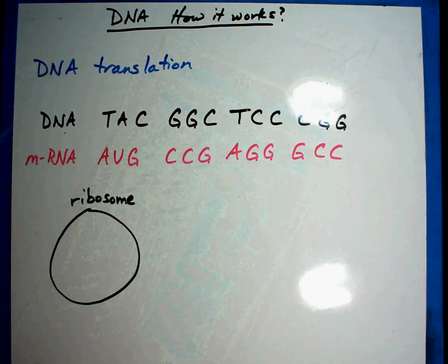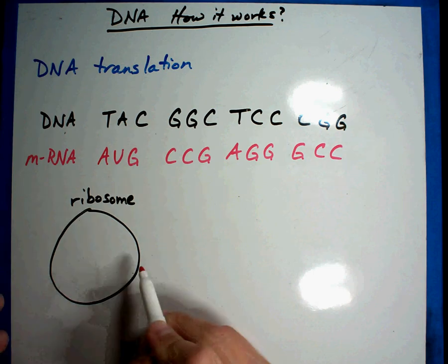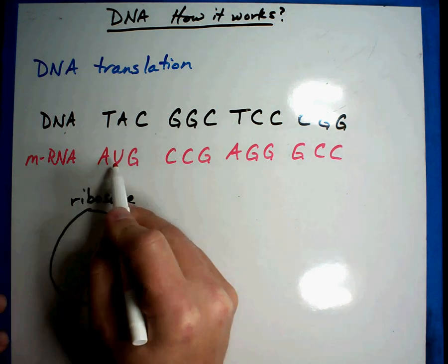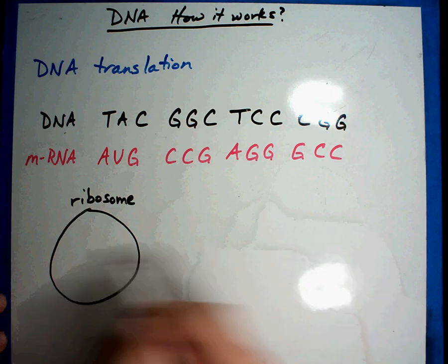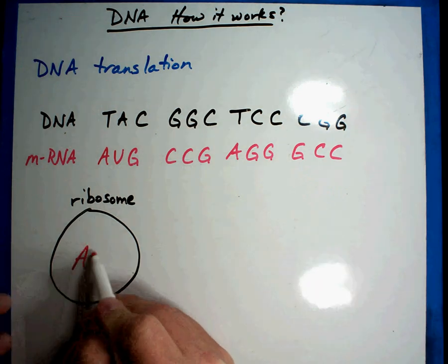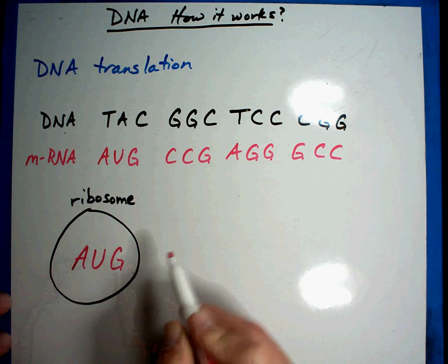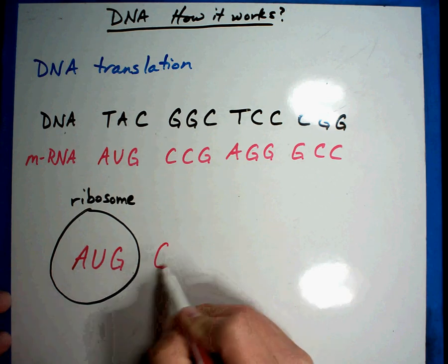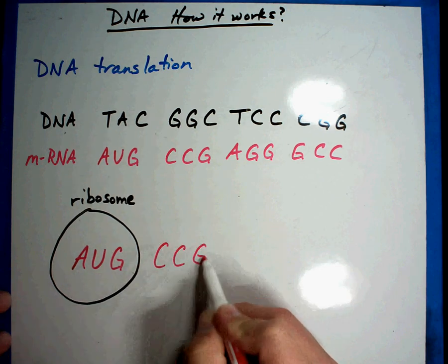Well, the ribosome is the machine that we're going to run it through. So what I'm going to do is I'm going to take this piece of RNA, messenger RNA, and I'm going to run it through the machine. Now the interesting thing, I'm going to make this a little larger so we can read it, is that it's going to read everything in groups of three.